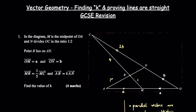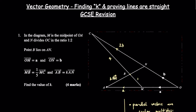Now we want AN. From A to N I could go via O, so that's negative 2a plus b. So AN equals b − 2a. Next, I also want a vector for AB. To go from A to B, I could go from A to M and then M to B. To find AB I need MB, and for MB I need MC. So there are lots of little steps — you work backwards from what you want to find.